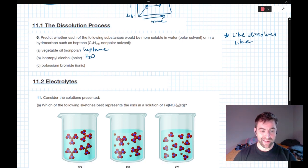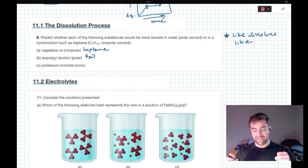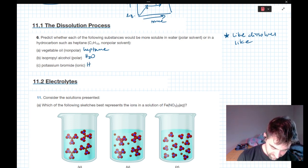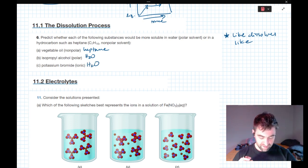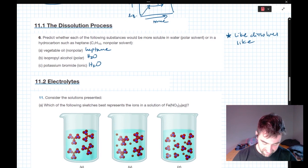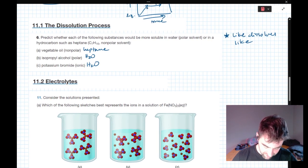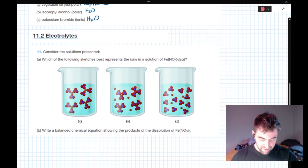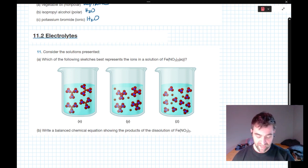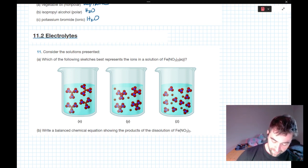Potassium bromide is ionic. This is a really strong dipole interaction where electrons actually escape from one another, to where the components totally dissociate from each other and interact just with those water molecules. And that's actually a really nice segue into this next exercise where we're talking about electrolytes. So consider the solutions present. Which of the following sketches best represents the ions in a solution of iron nitrate?